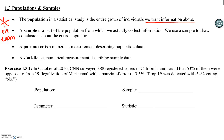Usually it is not possible for us to take a census and get information from all of those people, so we take a sample. A sample is a subset of that population — they're the people we actually collect information from. And our inferential statistics are when we're using that sample to draw those conclusions about the population.